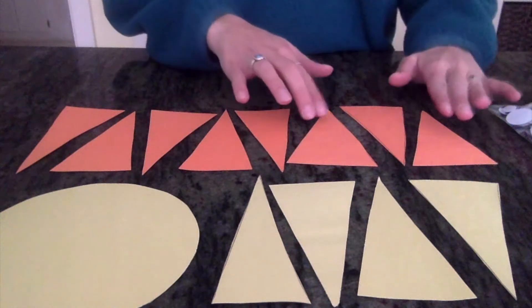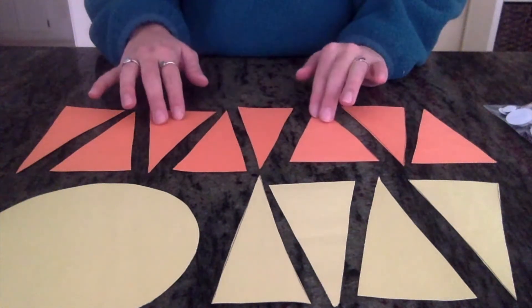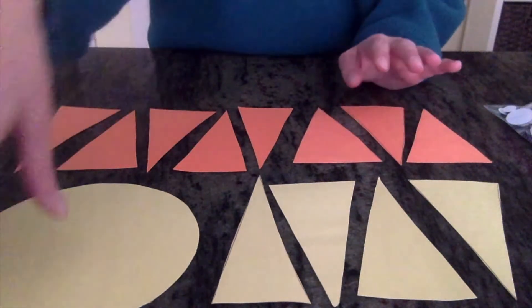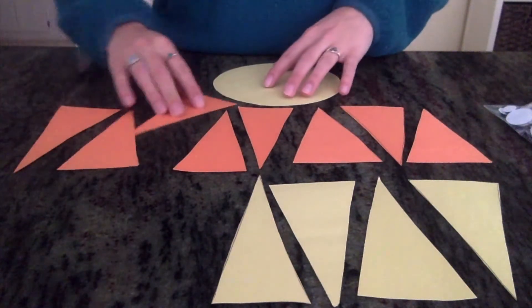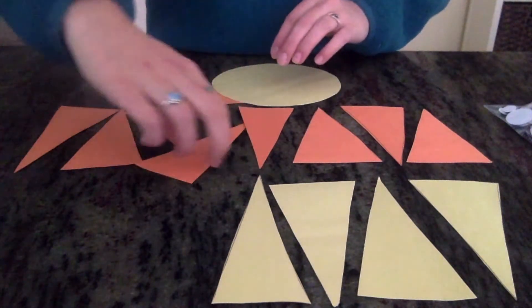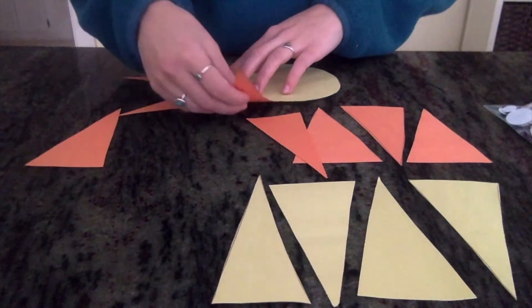So once we have 12 triangles of around the same shape, they don't have to be identical, we are going to be arranging them in the shape of the sun. So you can go ahead and put them around the circle.